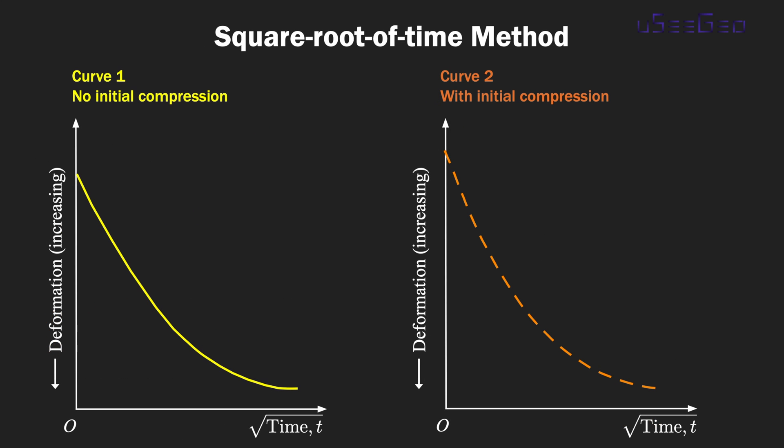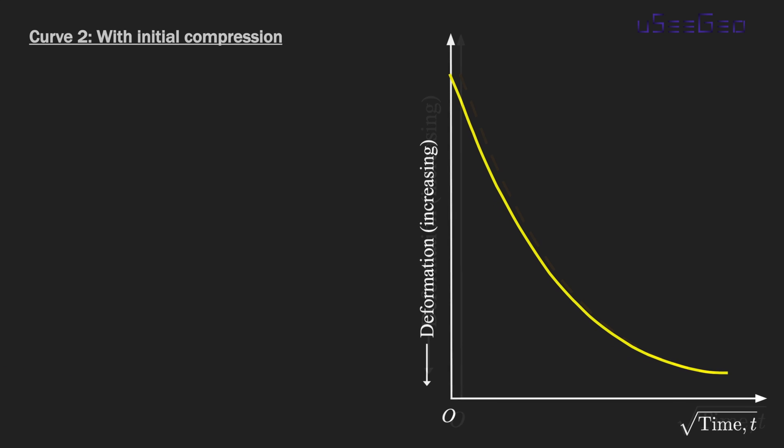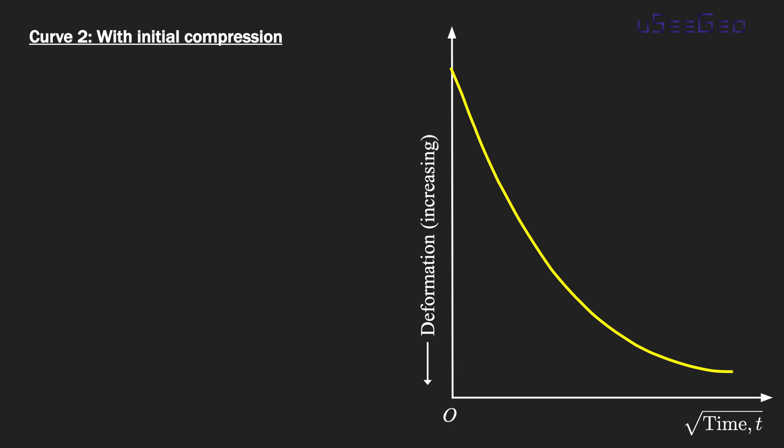Now let's look at the second curve. As I mentioned, you may have a consolidation curve where there's a rapid increase of deformation initially. So you have this initial compression due to either the immediate deformation of the specimen or the apparatus. For curve number two, when you have initial compression, the difference between this curve and the first curve is how you treat this initial linear portion.